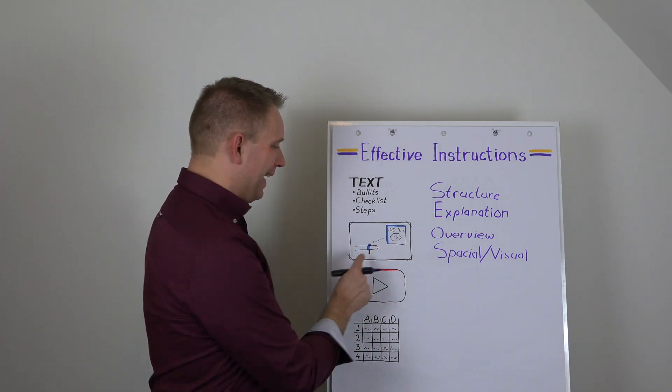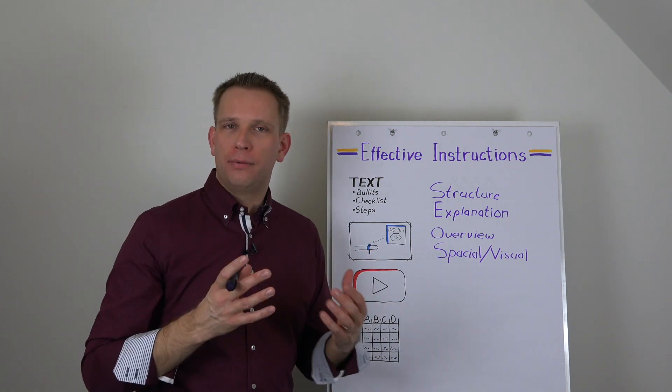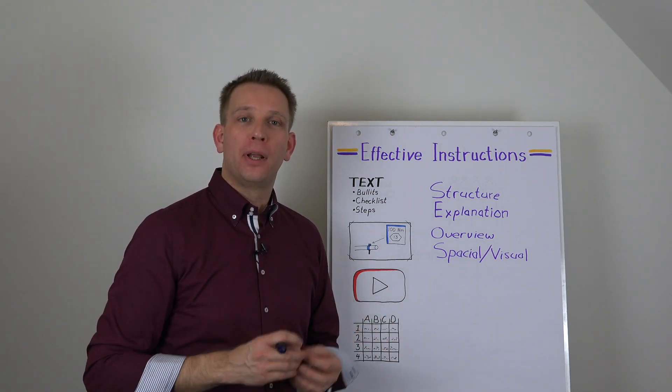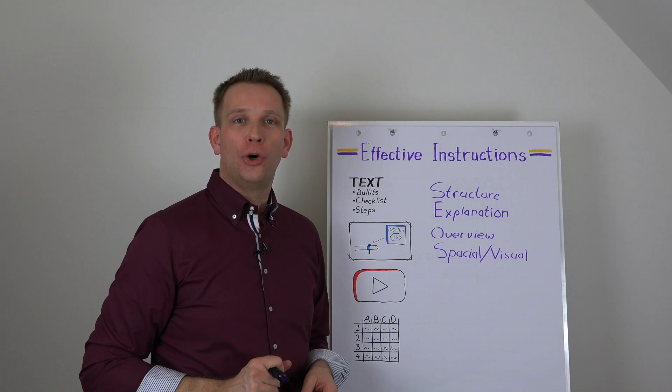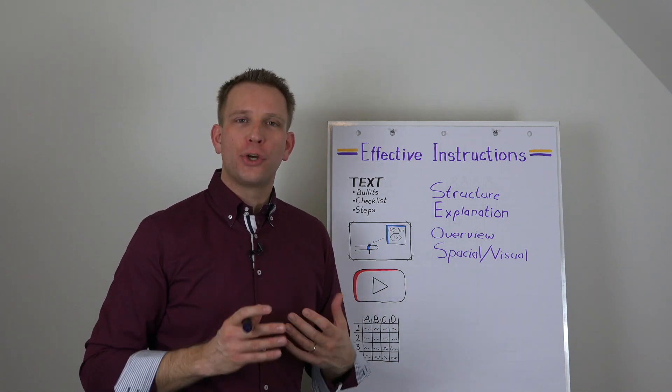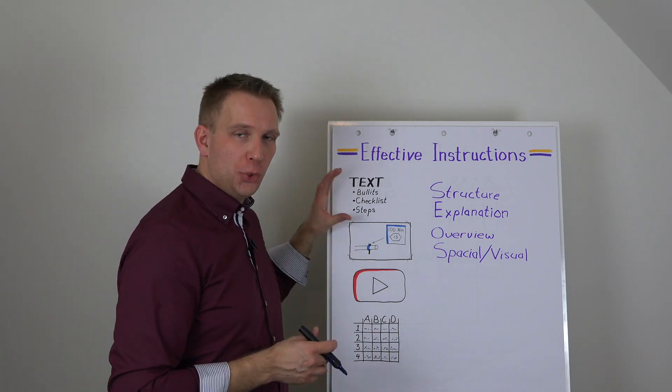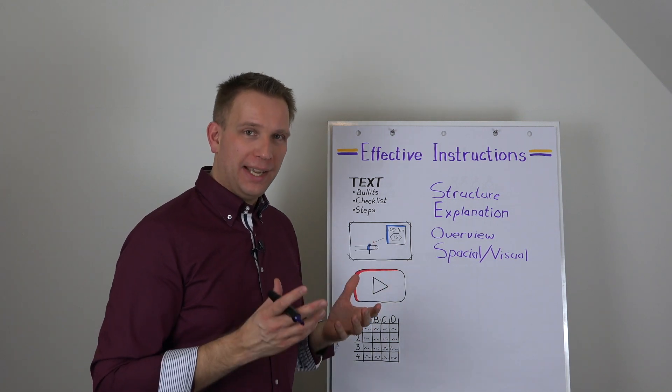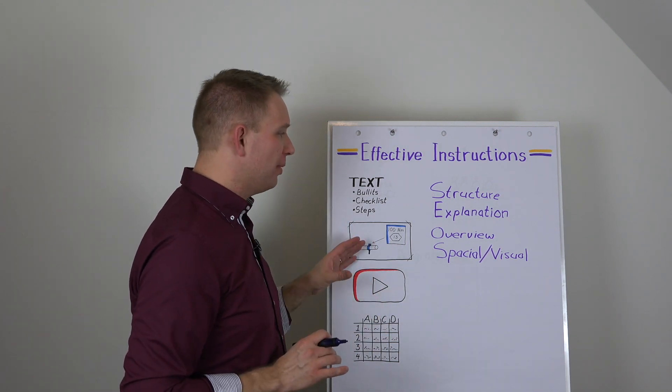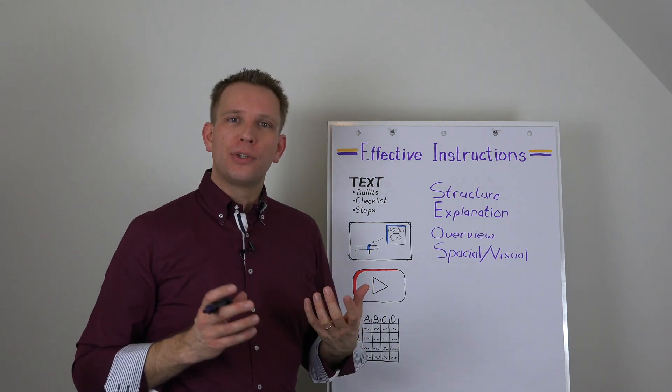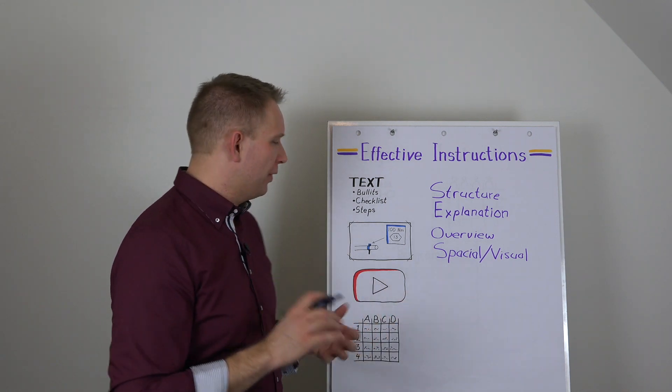And it can also be used a lot better than text for when we want to convey spatial or visual type of information. So when we want to indicate the place of a specific task or specific part, where it should be on a line, a picture is so much easier than using text.